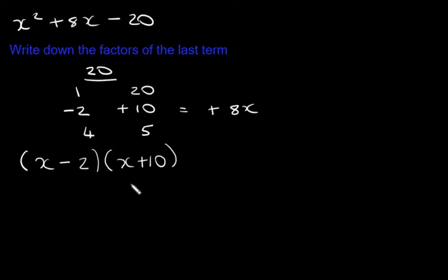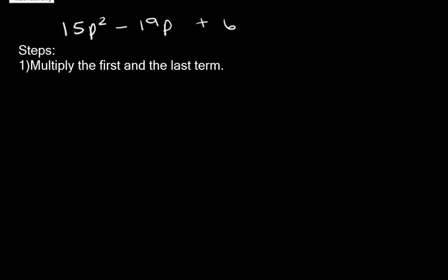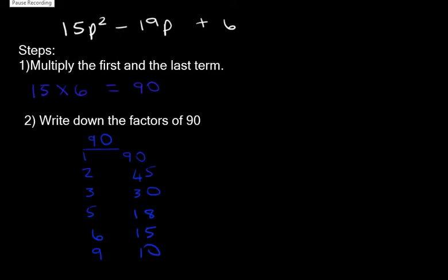Let's do a grade 10 trinomial. Let's look at 15p² - 19p + 6. What do you notice here? You notice that the a value is now greater than 1. This means that there will be extra steps. Now this method is different to the cross method that you do at school. But have a look at it and see if you are comfortable with it. Also check with your teacher if they are happy with you using this method.